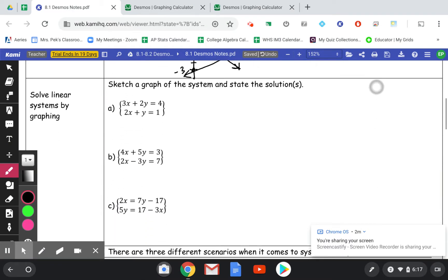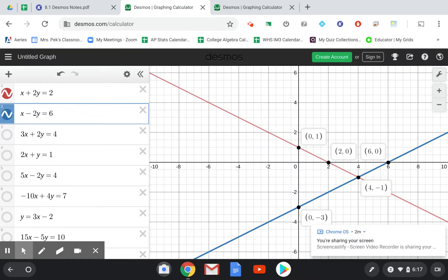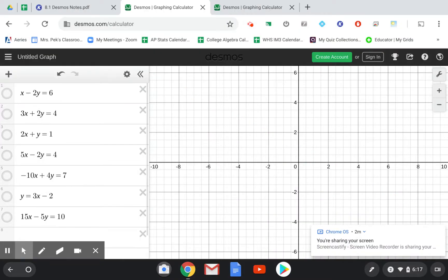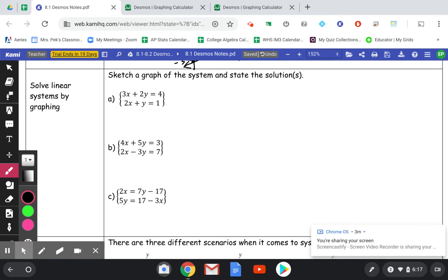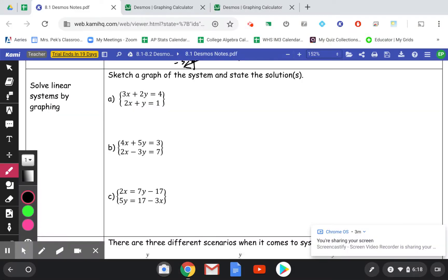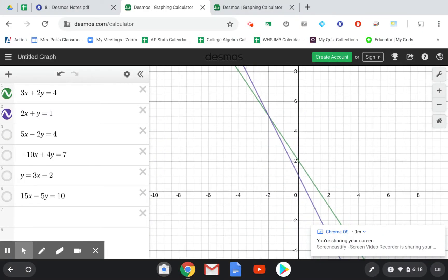So let's look at the next one. We want to sketch the graph of the system and state the solution. So again, we're going to go to Desmos. I'm going to turn these ones off and go to my next. Actually, I can just x them out now that I've used them. So here, I have 3x plus 2y equals 4. I'm going to turn that one on. There it is. And 2x plus y equals 1 is there. And then you can move your screen around if you need to, if it doesn't really show.